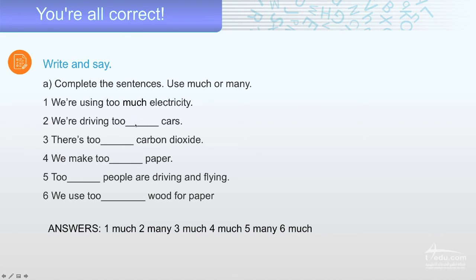What do you think? Just say what you think in your mind. Why? Number two. We are driving too many cars. Why? Just give me what you think. Number three. There is too much carbon dioxide. Why? Because there is so many cars and so many factories, for example. What do you think? And before, we make too much paper. Why? What do you think? Too many people are driving and flying. Number six, we use too much wood for paper. Why? What do you think? Just talk about it with your friend, member of your family. Speak in English.